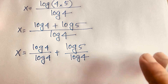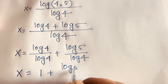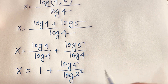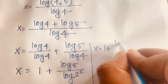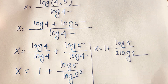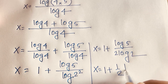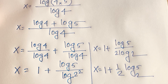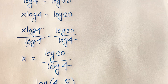This simplifies to x = log 4 / log 4 + log 5 / log 4, which equals 1 + log 5 / log 4. Since log 4 = log(2²) = 2 log 2, we get x = 1 + log 5 / (2 log 2), or x = 1 + ½ · log₂5. This is our final answer.